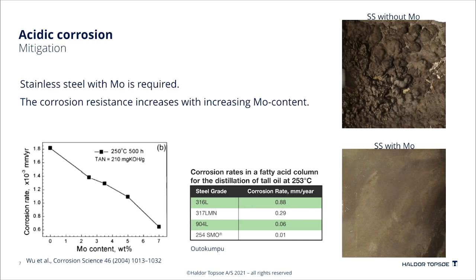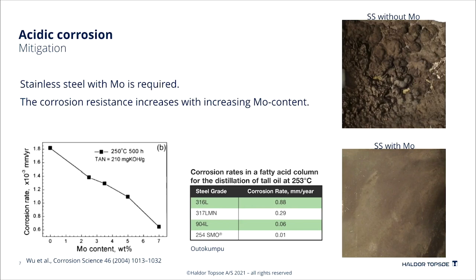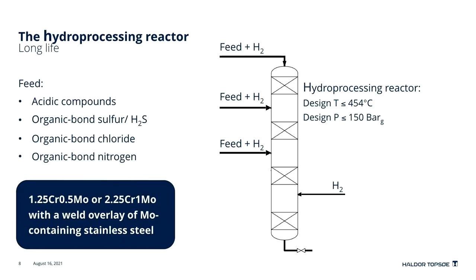These two surfaces are pictures of samples that have been exposed in a real reactor for a couple of years. The first one is of a steel without any molybdenum, and we clearly see how corrosion is occurring on the surface. The bottom image is of a stainless steel with sufficient amount of molybdenum. Here we see no corrosion.